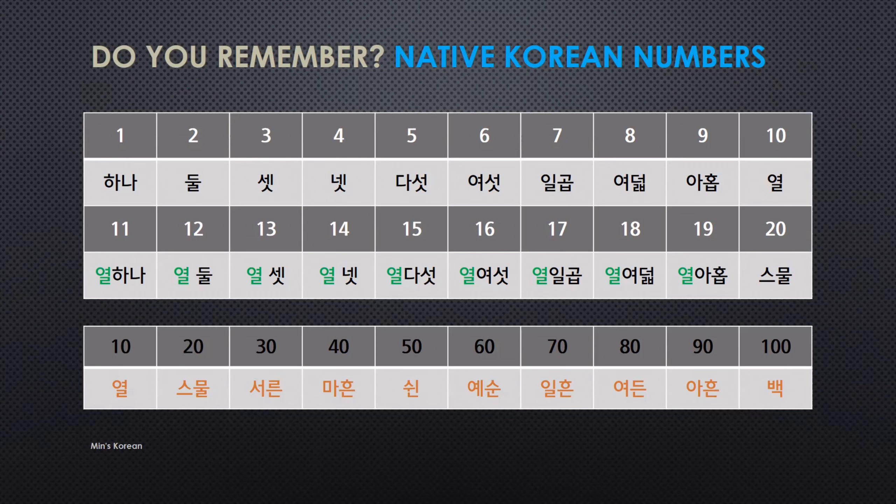And then 30 is 서른, 40 is 마흔, 50 is 쉰, 60 is 예순, 70 is 일흔, 80 is 여든, 90 is 아흔, and 100 is 백.